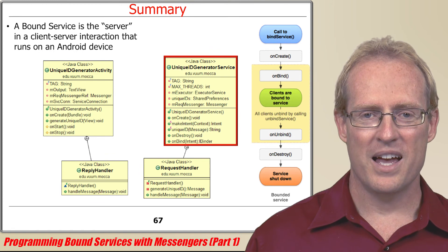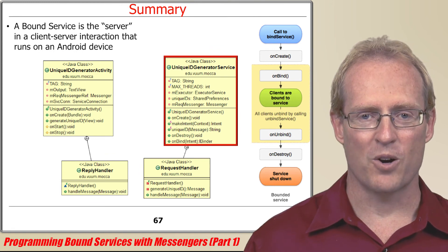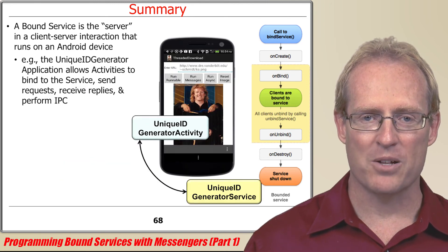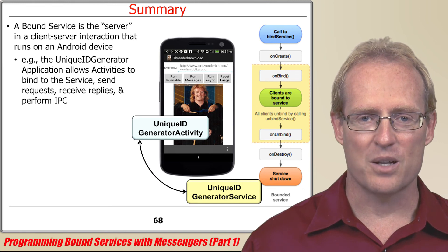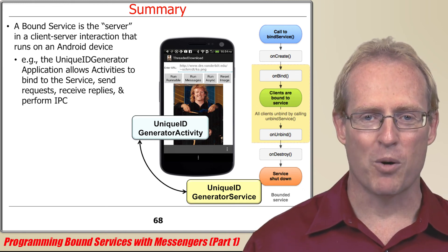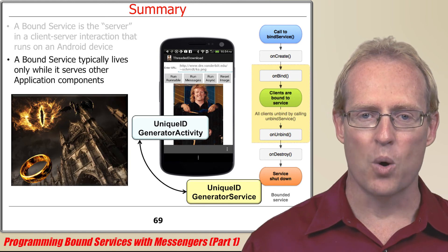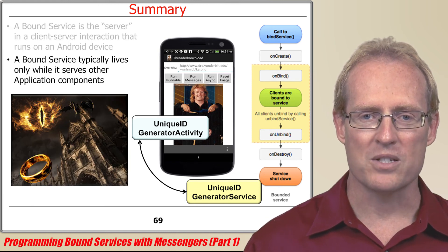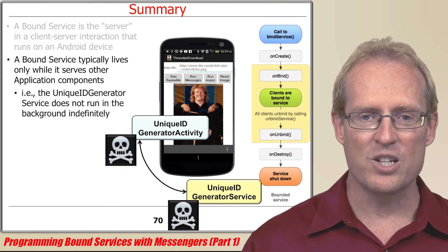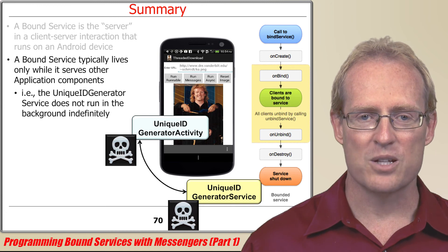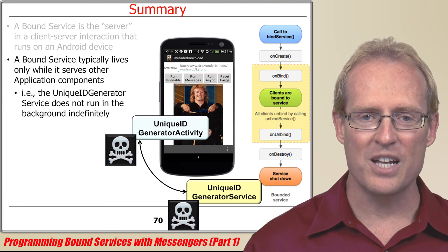In summary, a bound service is the server in client-server interactions that run on Android devices. For example, the unique ID generator application defines a bound service that allows activities to bind to the service, send requests, receive replies, and perform inter-process communication. A bound service typically lives only while it serves other application components. For example, the unique ID generator service does not run in the background indefinitely, but only lives as long as the unique ID generator activities that bind to it.